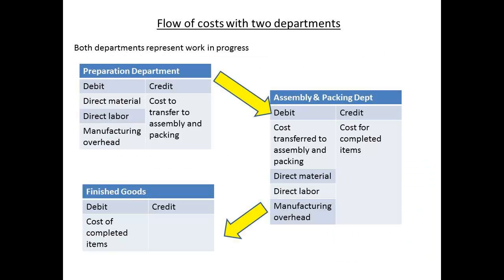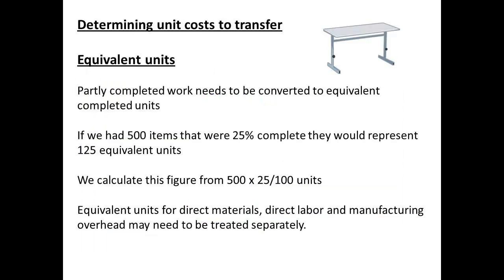Costs are tracked for these two departments. The diagram shows the flow of costs between the two departments. The preparation department will have inputs — debits of direct material, direct labour and manufacturing overhead. The output is the cost to transfer to assembly and packaging. The assembly and packaging department will have inputs: the cost transferred from preparation, plus the direct materials, direct labour and manufacturing overhead added at this stage. The cost of the completed items will be the cost that is transferred to finished goods.